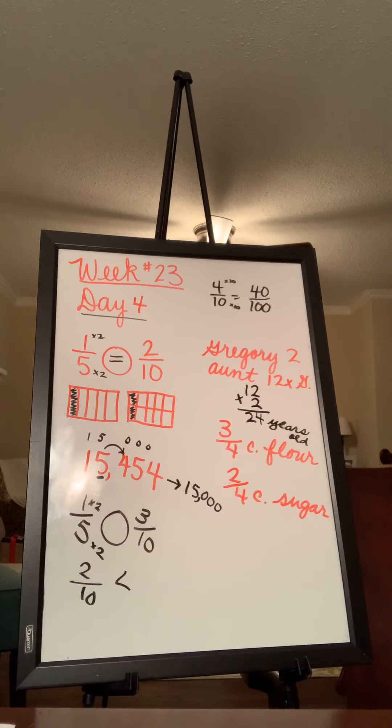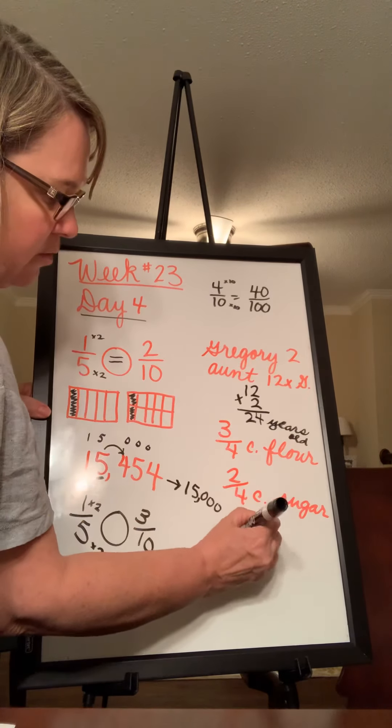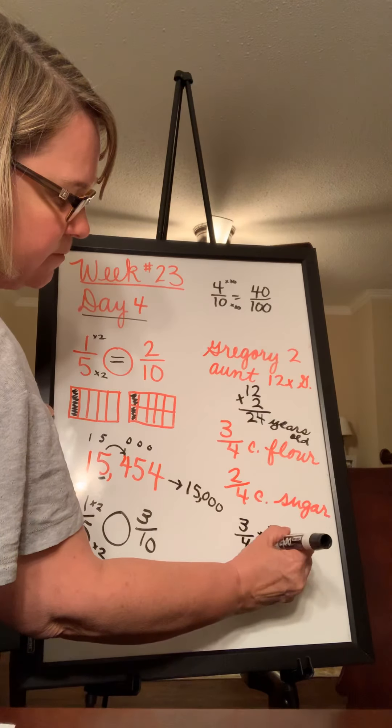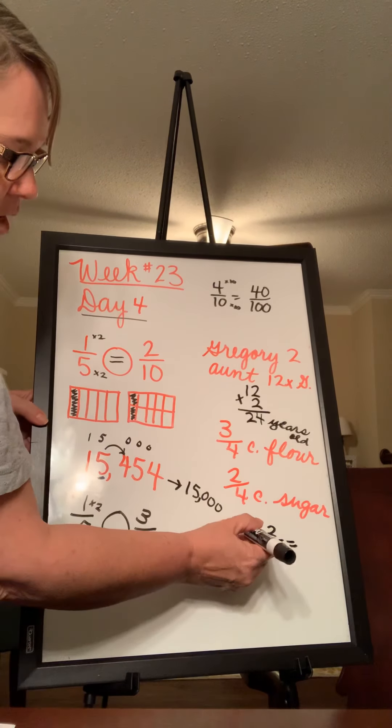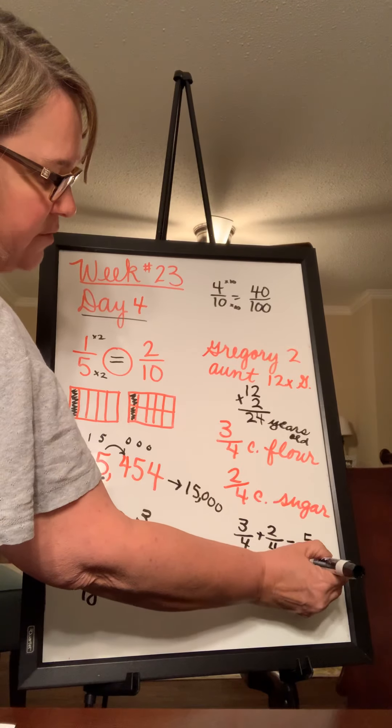Last, the recipe for Ryan's birthday cake calls for three-fourths a cup of flour and two-fourths of a cup of sugar. How many total cups of flour and sugar does the recipe call for? So we just need to add these two fractions. Three-fourths plus two-fourths. Because our denominators are the same, we just add the top numbers. Two plus three is five. Five-fourths.